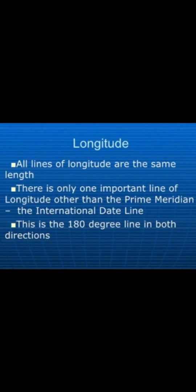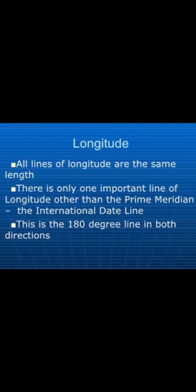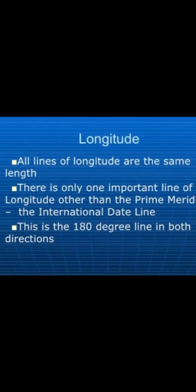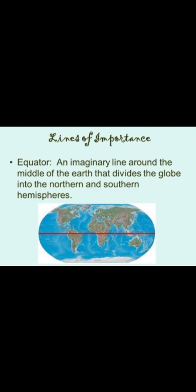The line at 0 degrees — or the reference line — is called the prime meridian, also known as Greenwich or the international date line. In 1884, geographers finalized that Greenwich would be the center point — the prime meridian — where time starts and ends.